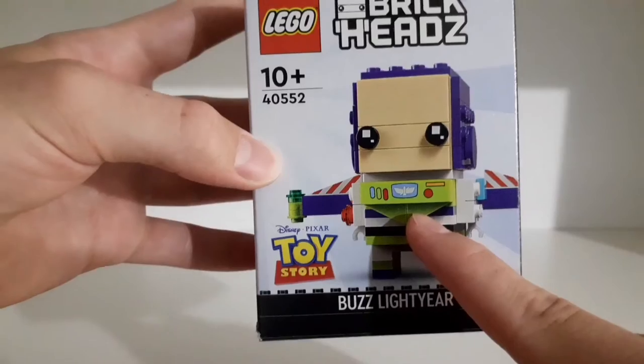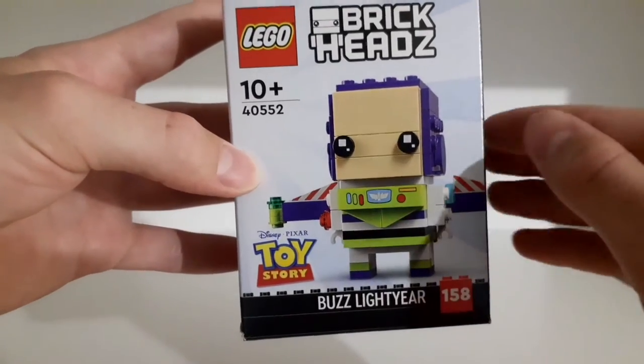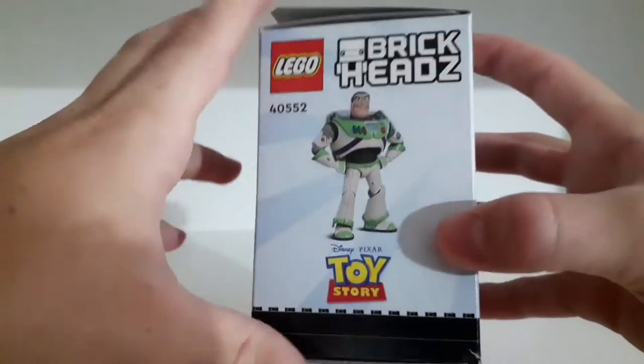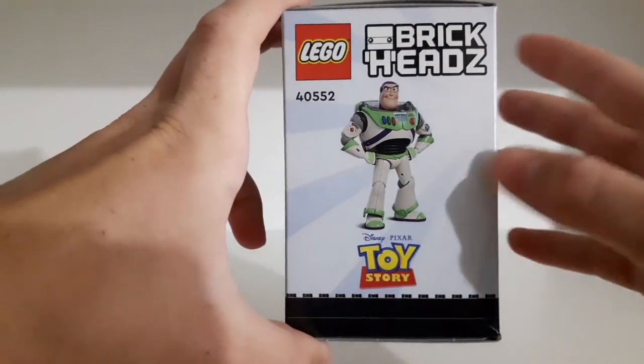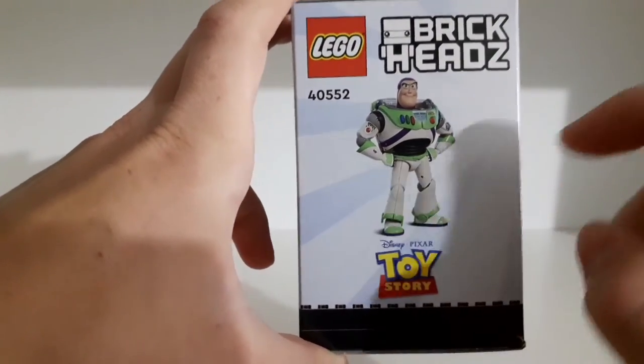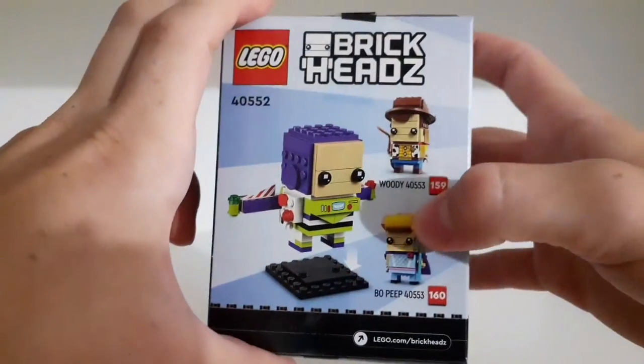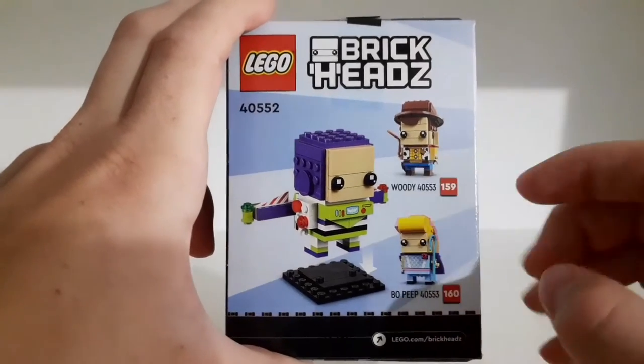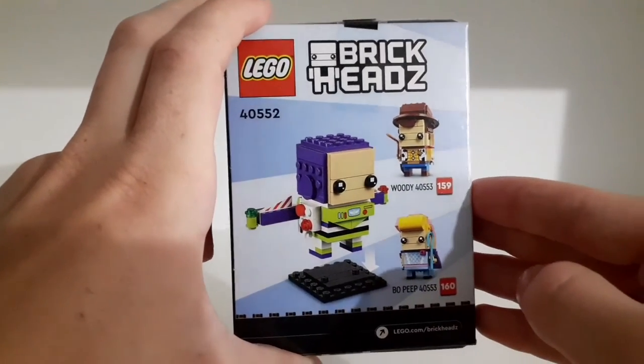As you can see you get a BrickHeadz figure of Buzz Lightyear in this set, of course from Toy Story. Here on the side of the box you can see an image of Buzz Lightyear and here on the back you can see that the set also comes with a stand and here's an advert for two other BrickHeadz figures.